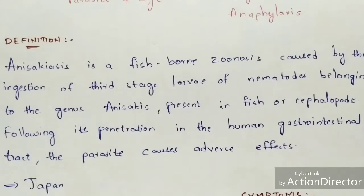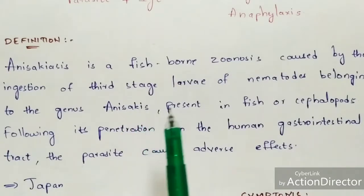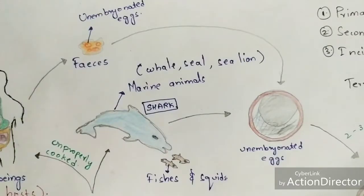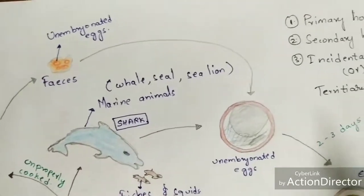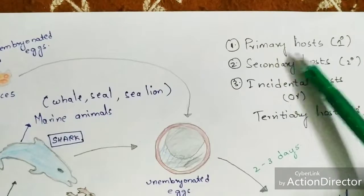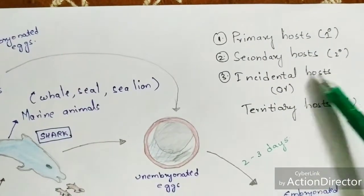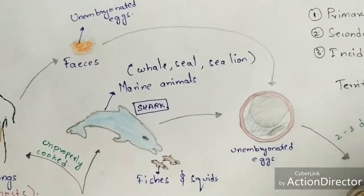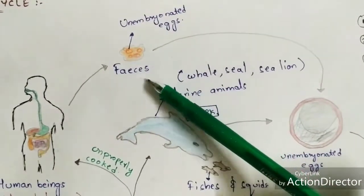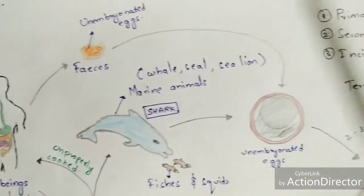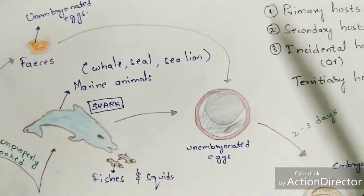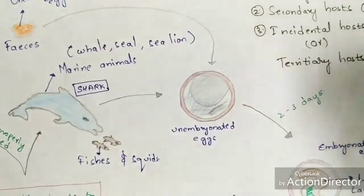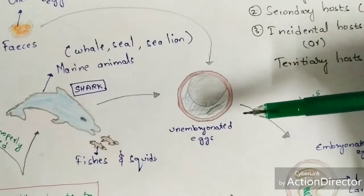The definition will be properly understood after completing the life cycle. Now let us learn about the life cycle of anisakiasis. The life cycle includes primary hosts, secondary hosts, and incidental hosts - also called tertiary hosts. The life cycle begins with unembryonated eggs, which are released through fecal matter by human beings and marine animals.